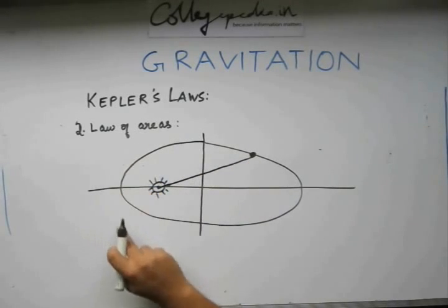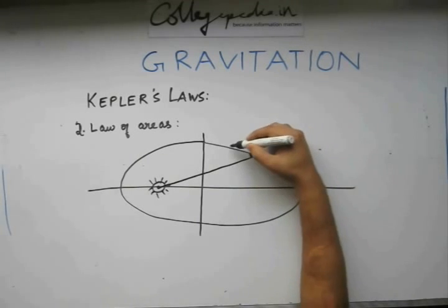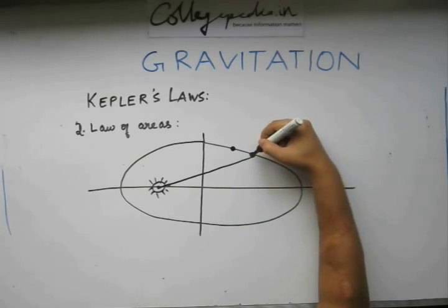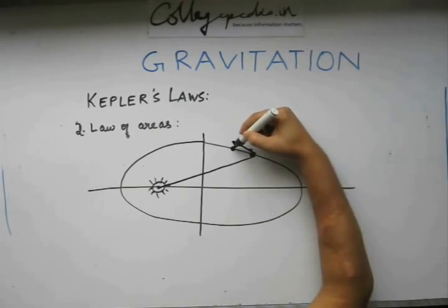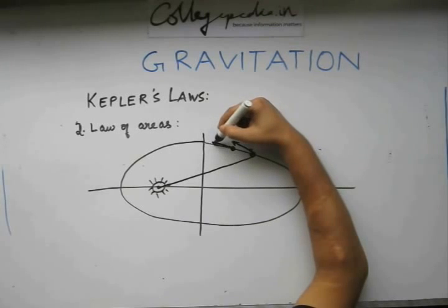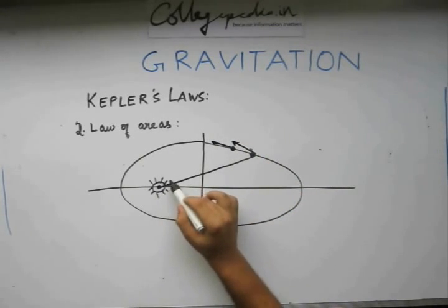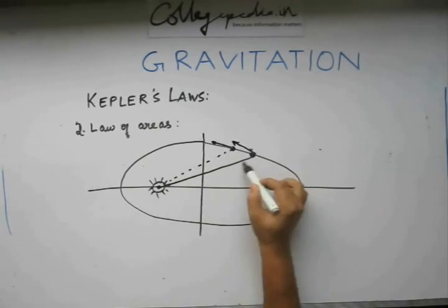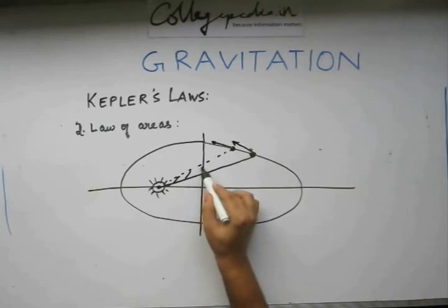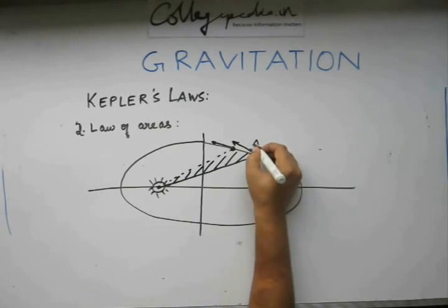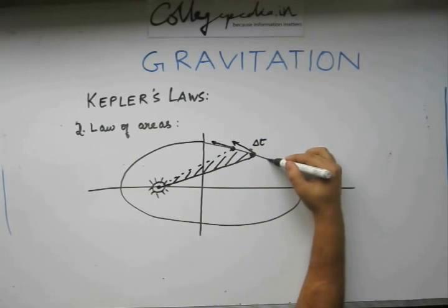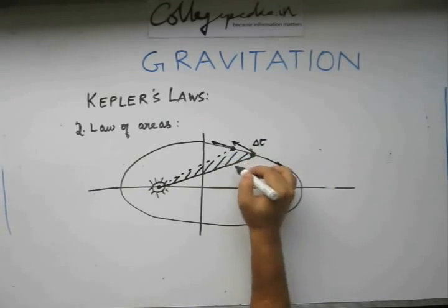Because this planet is revolving, this planet is going to change its position from here to say at a time T plus delta T here. At this point of time, similar to a circle, this planet is going to have a tangential velocity in this direction. At this point, it is going to have a different direction. So this line here, this forms a triangle and this is the area we are talking about. So what we mean to say that in time delta T, this planet has swept out, say this area delta A.